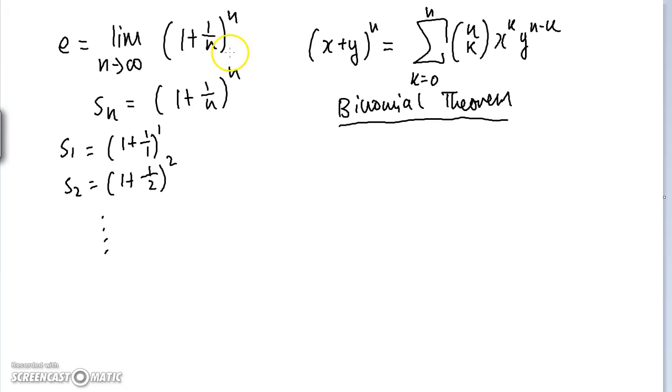Remember, when we consider the convergence of sequences, we're only interested in natural numbers. We only want to find a natural number such that if we take all terms of the sequence after the big Nth natural number, the distance between these terms and our limit can be made as small as we like. So we're only concerned with natural numbers. We can expand S of N using the binomial theorem.